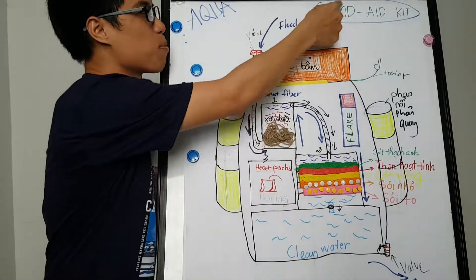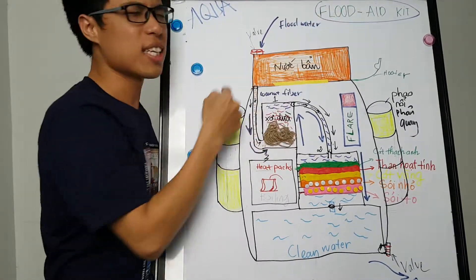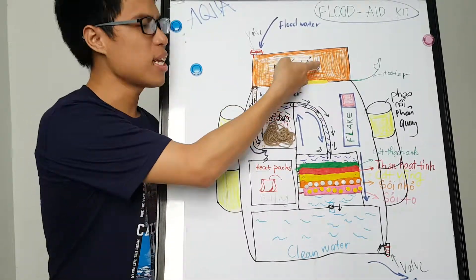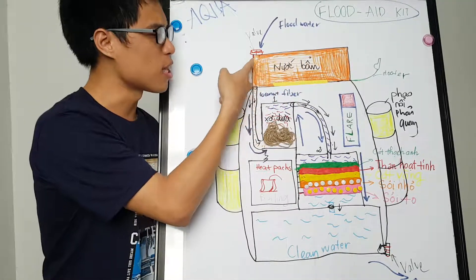So, let me introduce to you our product we call the Blood Adkin. With this product, the dirty water will be combined with 10 in the above container here.